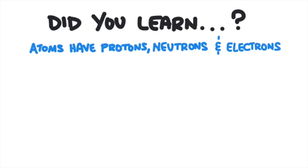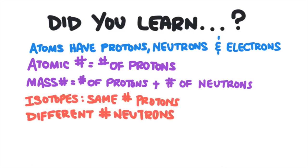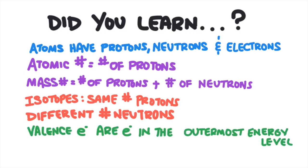So did you learn everything in this video? If you did, you learned that atoms are made of protons, neutrons, and electrons. The atomic number identifies the number of protons in the nucleus of an atom. The mass number is the sum of the number of protons and neutrons in the nucleus. Isotopes are atoms with different numbers of neutrons but the same number of protons. Electrons move about the nucleus in different energy levels, and valence electrons are the electrons in the outermost energy level.